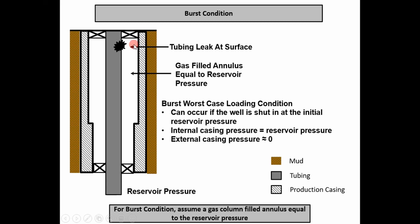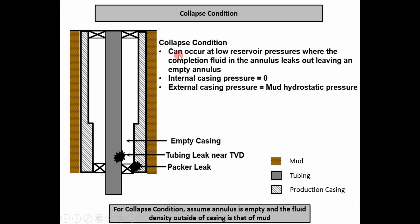At the surface, if we consider a stress element, the pressure on the inside is equal to reservoir pressure, but the hydrostatic mud column is not very tall at the surface, so there's really no pressure on the outside of the casing. This has a tendency to burst the casing at the surface. For the burst condition in summary, you assume a gas-column-filled annulus equal to reservoir pressure.